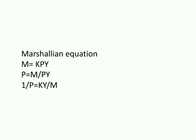Md = KPY. Md is the quantity of money, that is currency plus demand deposits. P is the price level. Y is aggregate real income.